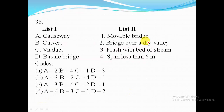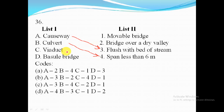Causeway has floor flush with bed of stream; culvert has span less than 6 meter; viaduct is a bridge over a dry valley; bascule bridge is a movable bridge. For this question, option C is the correct answer.